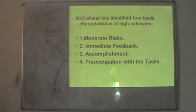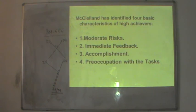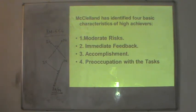The fourth characteristic of high achievers is that they are very much preoccupied with the task. They would never sit idle and always keep on doing some work or tasks. These are the four sets of traits of high achievers. This completes our set of all content theories, or need-based theories, of motivation, which explains motivation from a need-based angle — a person would be motivated if he has certain needs, and then he would perform better in the organization. Thank you.